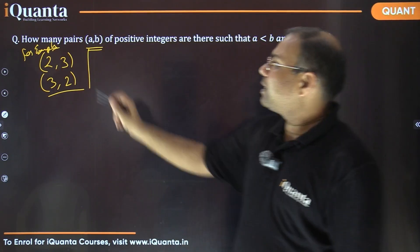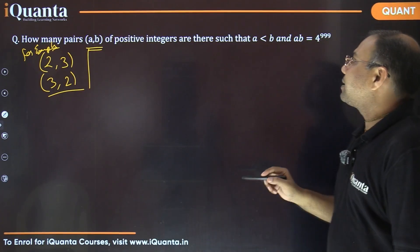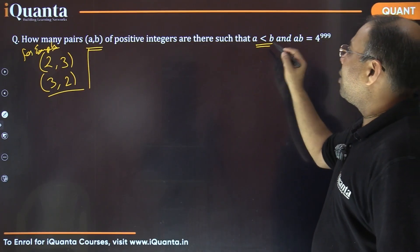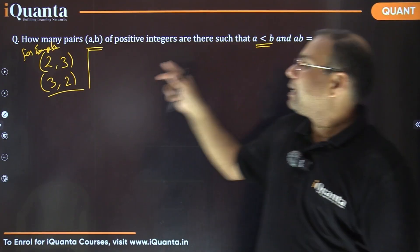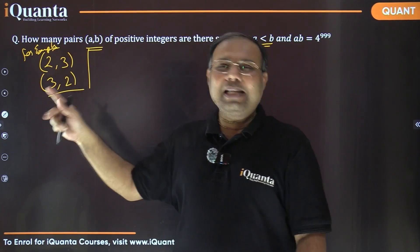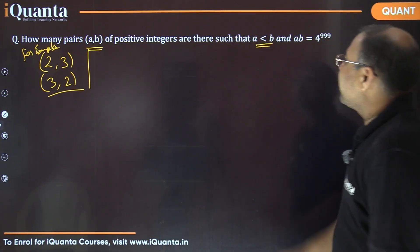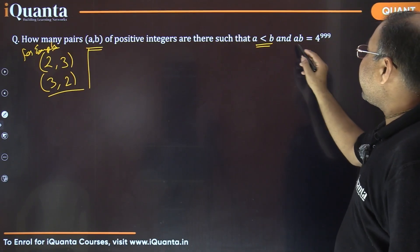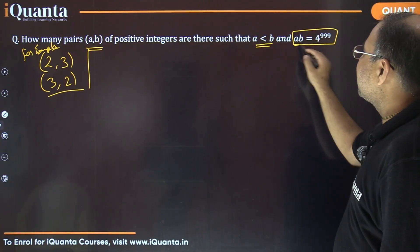Let me read. So question is how many pairs AB of positive integers are there such that A is less than B? Because it is clearly specifying A is less than B. That means in case two and three satisfy, so three, two won't.